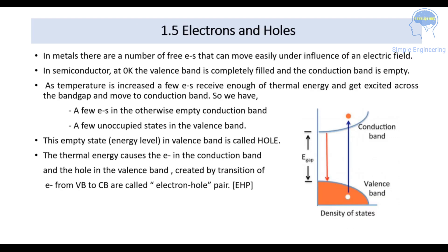Next are electrons and holes. We will be dealing with the energy gap, conduction band, and valence band. In metals, there are a number of free electrons that can move easily under the influence of an electric field. In a semiconductor at zero Kelvin, the valence band is completely filled and the conduction band is empty.